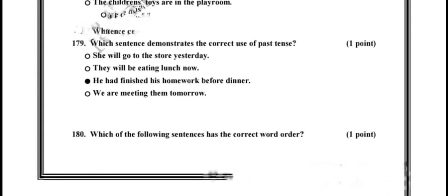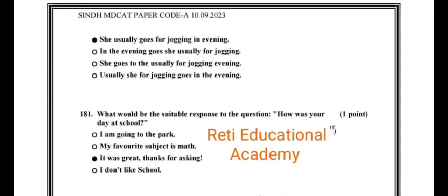Question No. 180. Which of the following sentences has the correct word order? The correct option is: she usually goes for jogging in the evening.